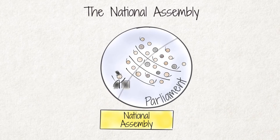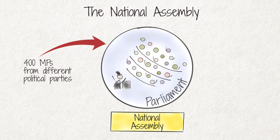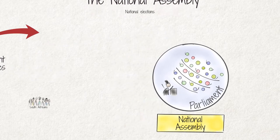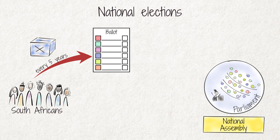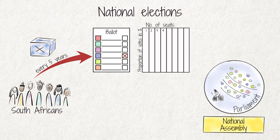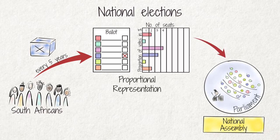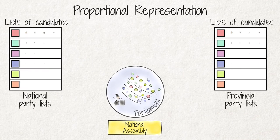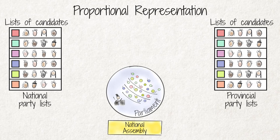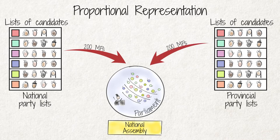The National Assembly is made up of 400 representatives from different political parties, called members of parliament or MPs. South Africans indirectly elect MPs every five years by casting votes for the party of their choice. Seats are then allocated to each party based on the number of votes the party received, using the proportional representation system. Each party compiles lists of candidates and MPs are allocated from this list in the order the names are listed. Half of the 400 MPs are selected from national party lists and the other half from provincial lists.